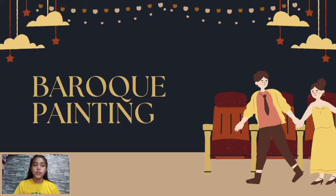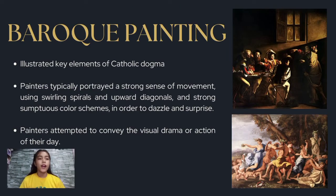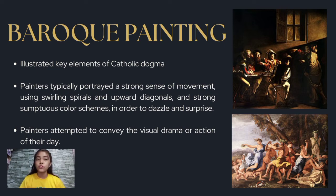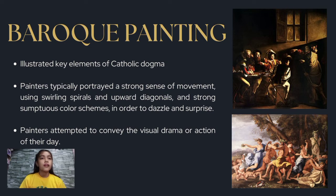The next topic we are going to discuss is about Baroque painting. Baroque painting illustrated key elements of Catholic dogma, either directly in Biblical works or indirectly in mythological or allegorical compositions. Along with this monumental, high-minded approach, painters typically portrayed a sense of strong movement using swirling spirals and upward diagonals and strong sumptuous color, in order to dazzle and surprise. By focusing on spiritual and theological themes throughout the Baroque period, painters attempted to convey the visual drama or action of their day.